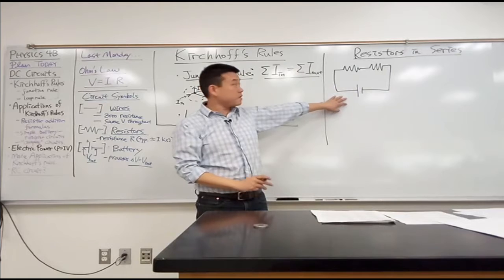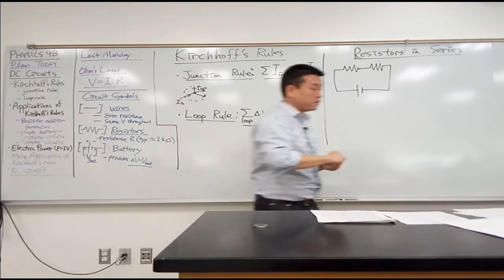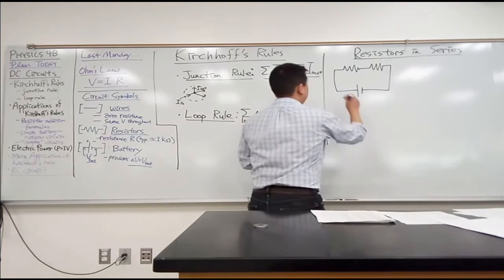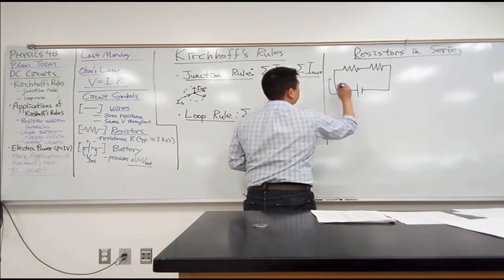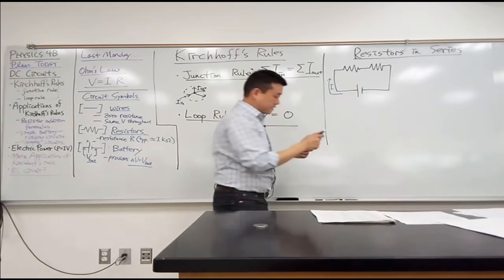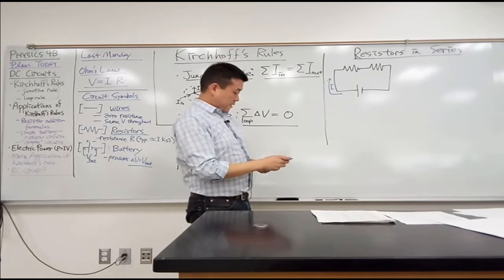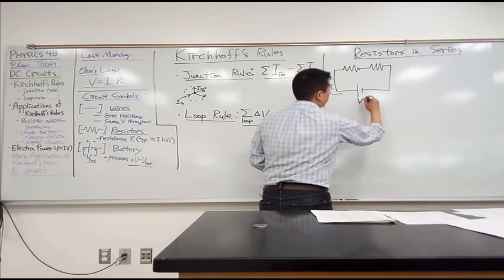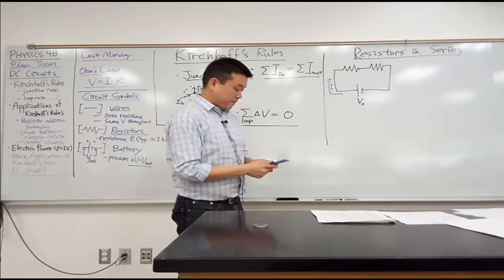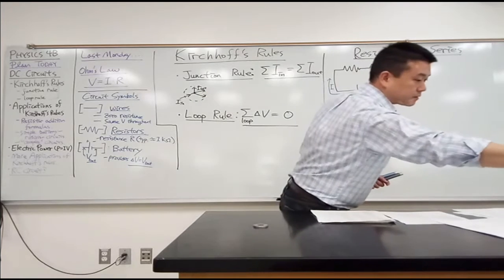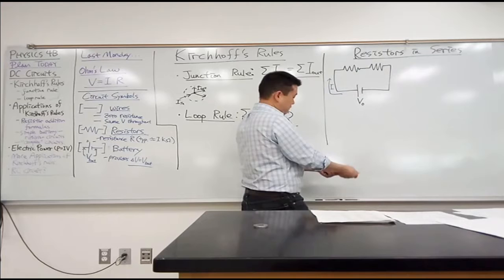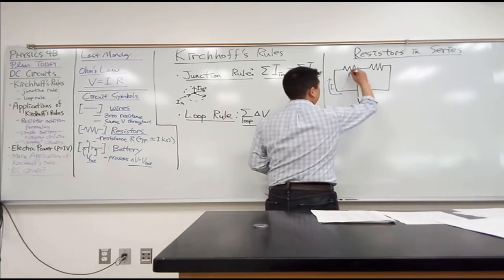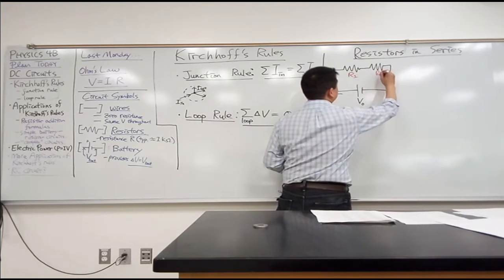So this is a circuit. There's a path for current to flow. There's a path for current to flow like this. And let's say that this battery has some voltage V0, and the resistances of these resistors are some values R1 and R2.